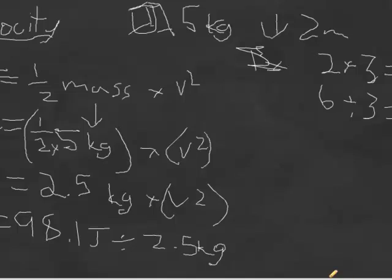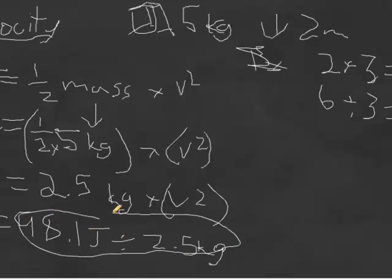So now all we really have to do is divide: 98.1 divided by 2.5 is 39.4. So this whole problem here is equal to 39.4.